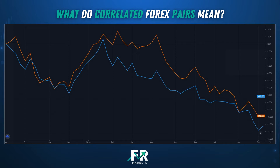AUDUSD and NZDUSD will also be a correlated Forex pair. As you can see on the screen, NZDUSD and AUDUSD are positive correlations. So when NZDUSD is moving up, so is AUDUSD, and when NZDUSD is moving down, so is AUDUSD.